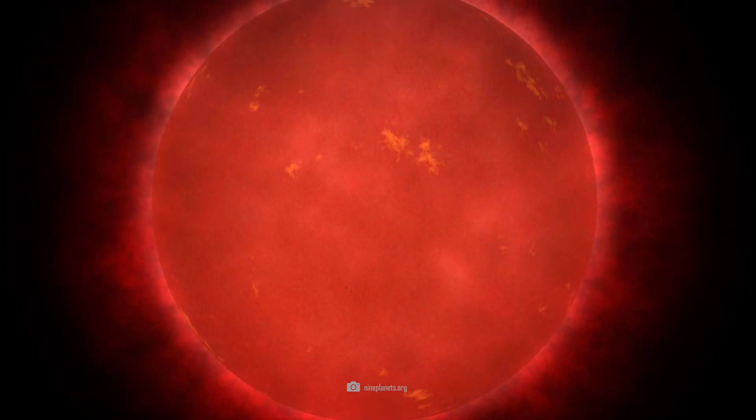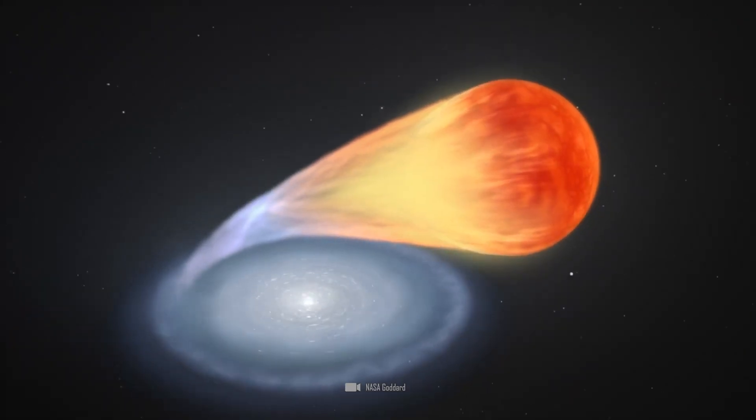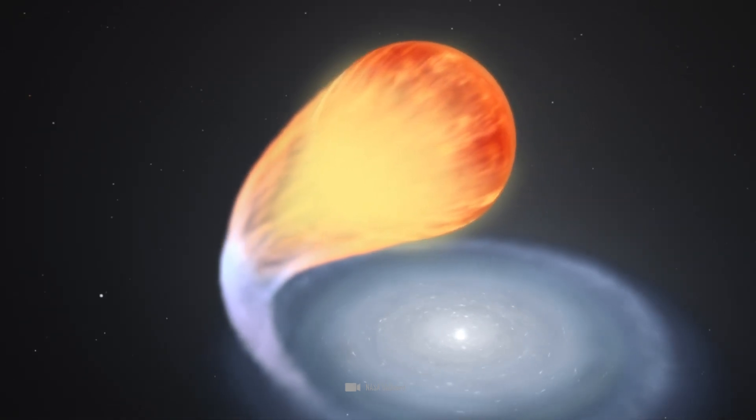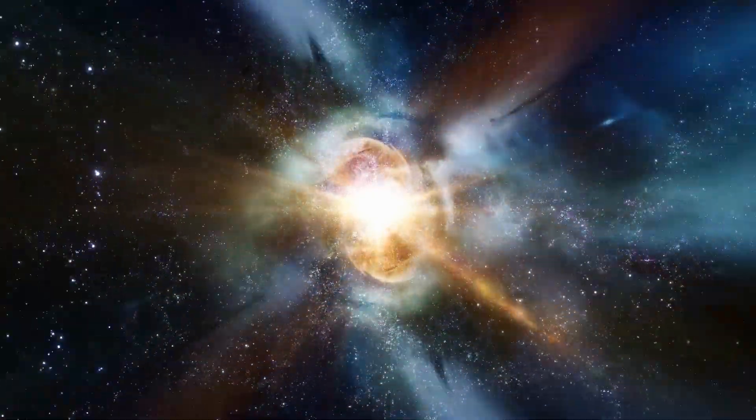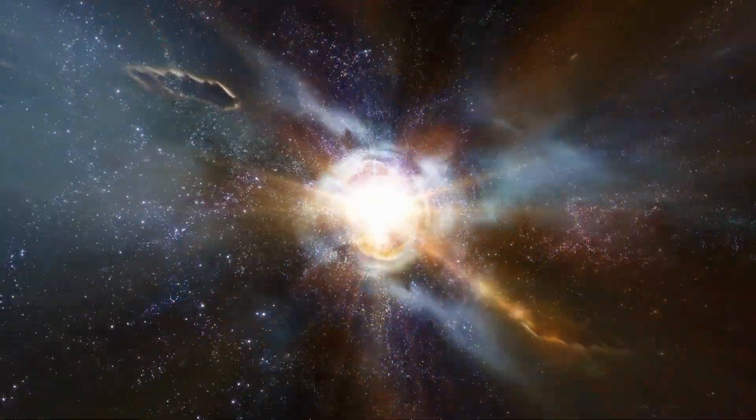Compared to the white dwarf, the red giant is much wider and appears more voluminous. But it's not as dense and thus loses its mass to its much smaller but heavier companion. Mainly hydrogen is extracted, which then forms an inflammable mixture on the surface of the white star.